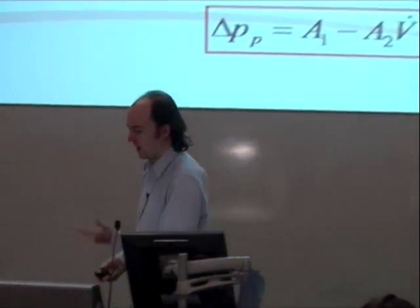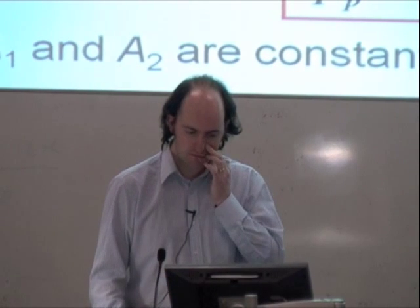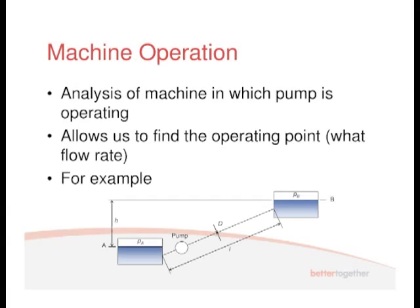We are looking at the relationship between the flow rate and the pressure rise that the pump can create. Once you've got the pump characteristic, we can then try and match up what the pipe is doing so we can determine the operating point. If we take a pipe system, we can analyse it to determine which pump is operating and where it's operating.